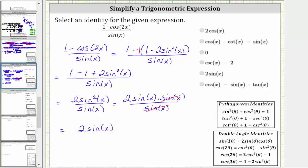So the given expression simplifies to two sine x, which looking at the choices is an option. We select two sine x. I hope you found this helpful.